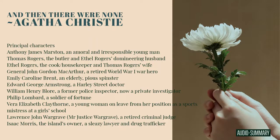Eight people arrive on a small isolated island off the Devon coast, each having received an unexpected personal invitation. They are met by the butler and cook-housekeeper Thomas and Ethel Rogers, who explain that their hosts, Ulick Norman Owen and Una Nancy Owen, have not yet arrived, though they have left instructions. A framed copy of the old rhyme Ten Little Niggers hangs in every guest's room, and on the dining room table sit ten figurines. After supper, a phonograph record is played.